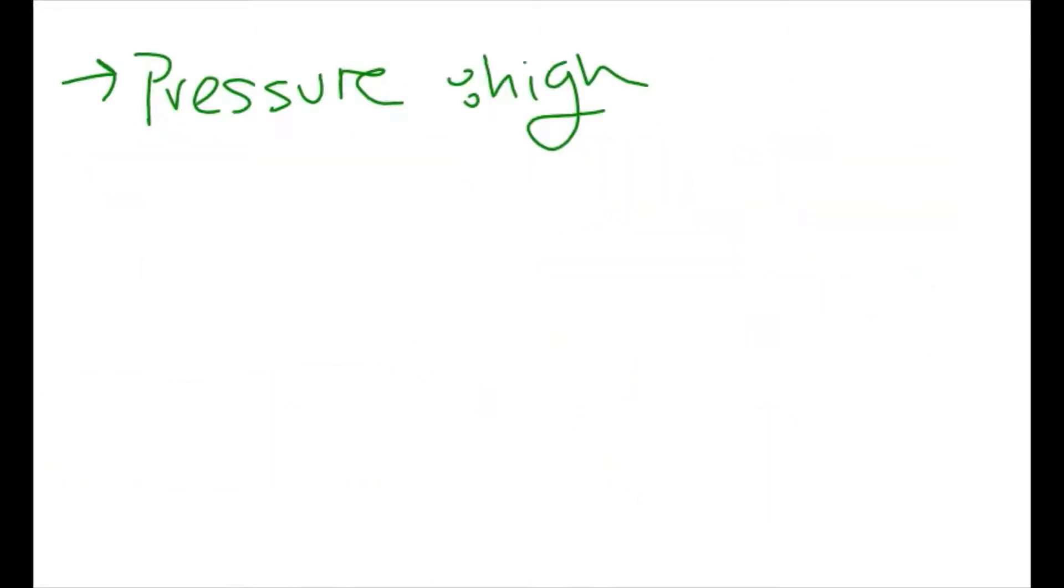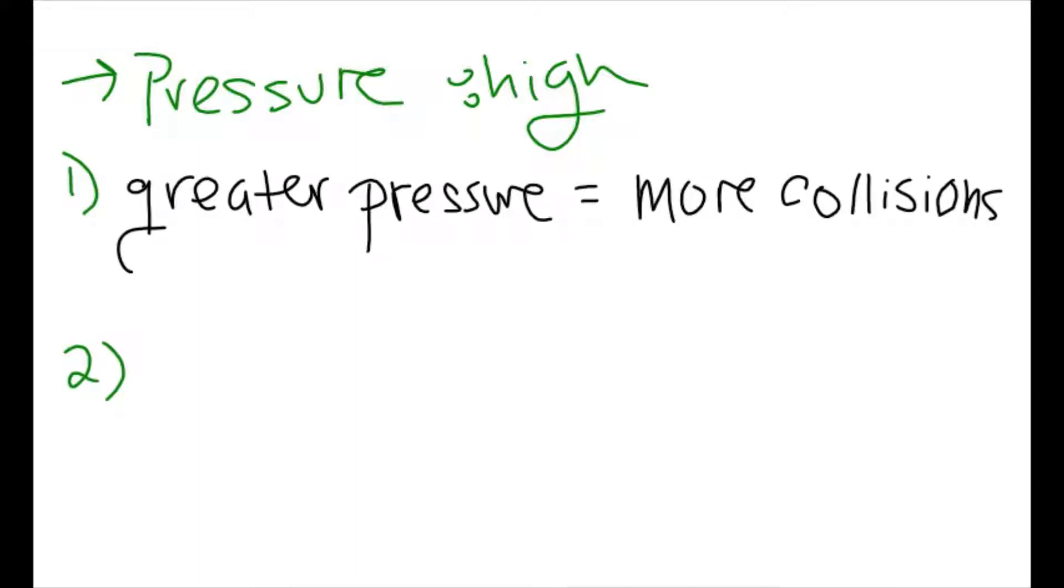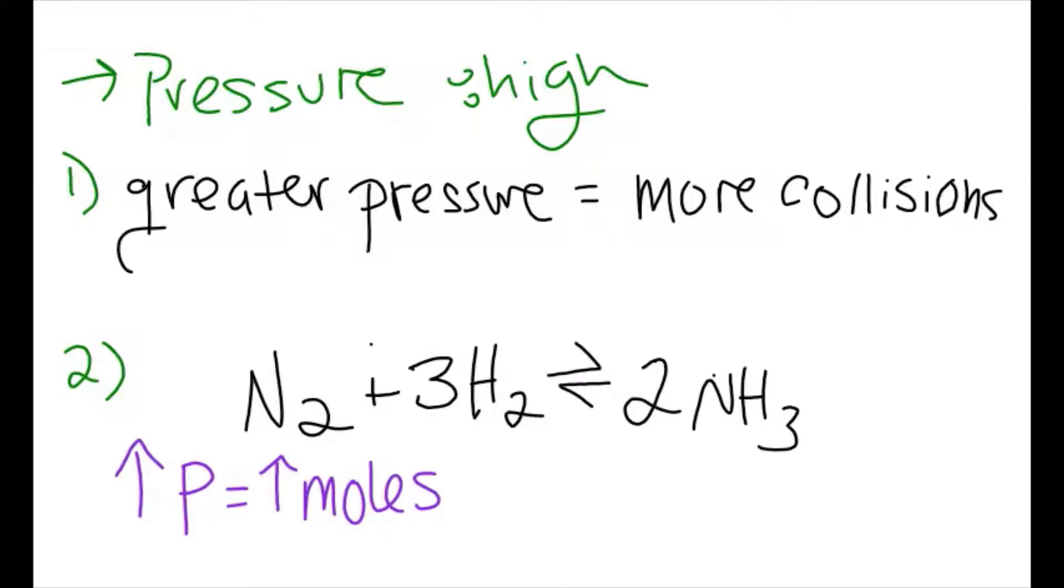Now on to pressure. We want the highest pressure possible for two reasons. First, higher pressure makes nitrogen and hydrogen gas particles more likely to collide and combine to create ammonia. Second, in terms of Le Chatelier's principle, higher pressure increases moles. To offset this stress, we shift to the side with fewer moles.